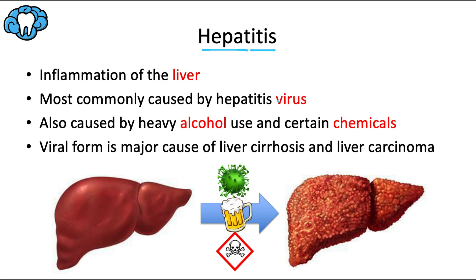Alcoholic hepatitis is caused by heavy and chronic alcohol use, and toxic hepatitis can be caused by certain poisons, chemicals, medicines, or supplements. These agents would be called hepatotoxins, which are toxic to the hepatocytes of the liver.